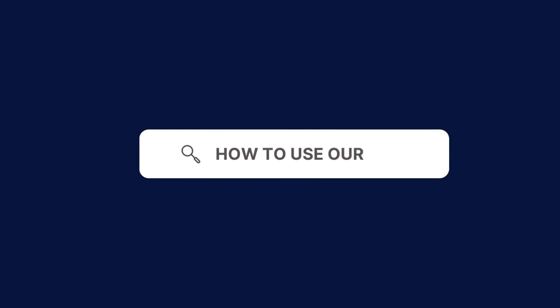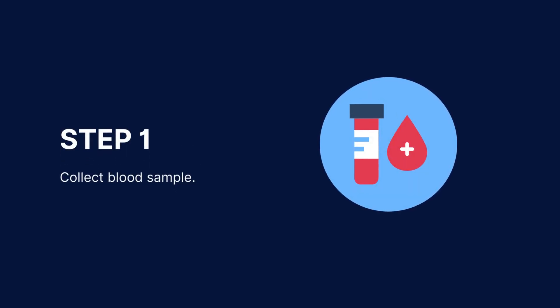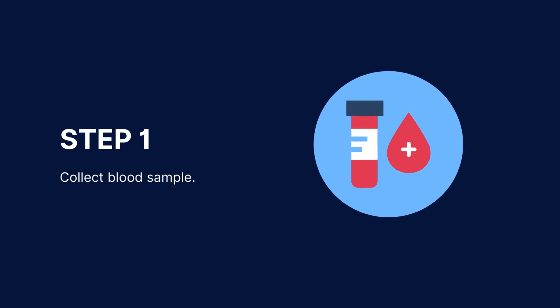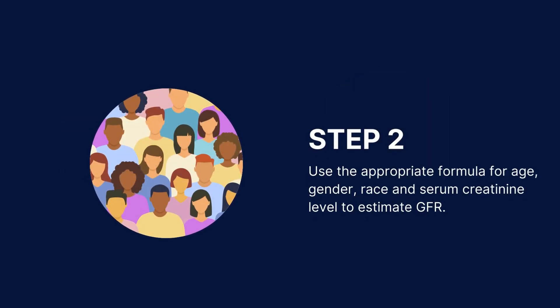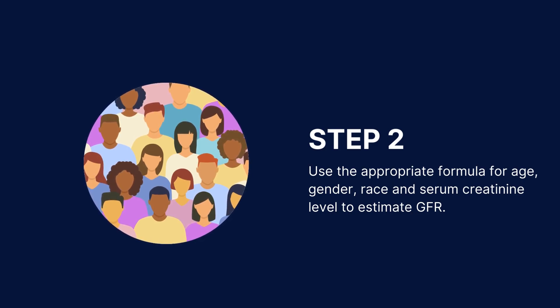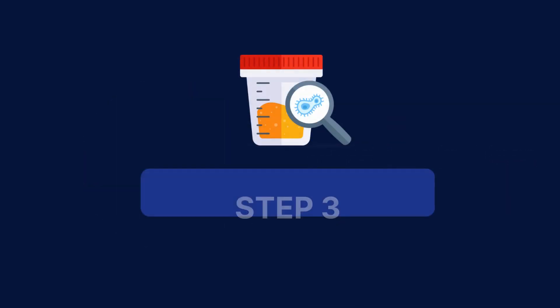To use our free RFT, follow these steps. Download our RFT from the CarePatron platform, which you can find in the link in the description. Collect a blood sample from a vein in the arm using a needle and syringe for BUN and serum creatinine tests. Next, use a formula that considers the patient's age, gender, race, and serum creatinine levels to estimate GFR.